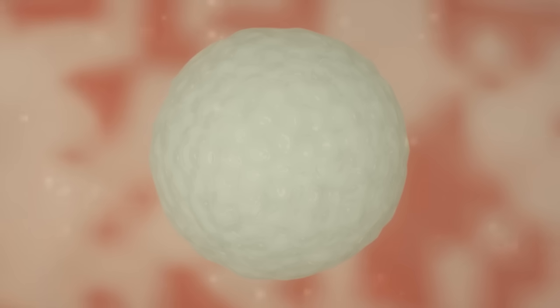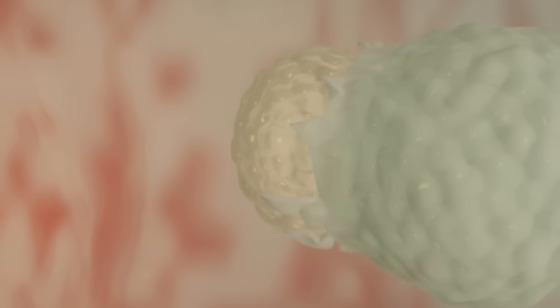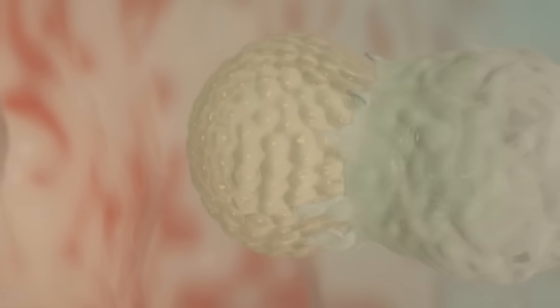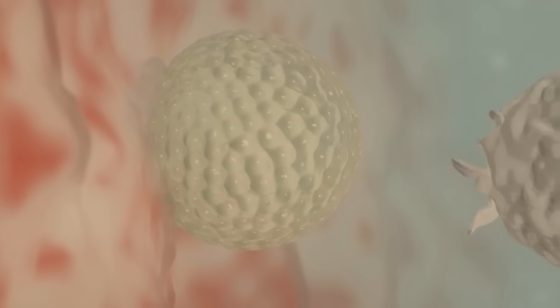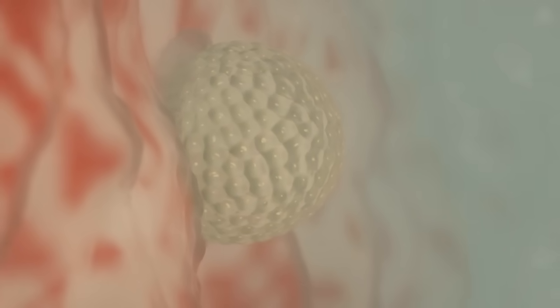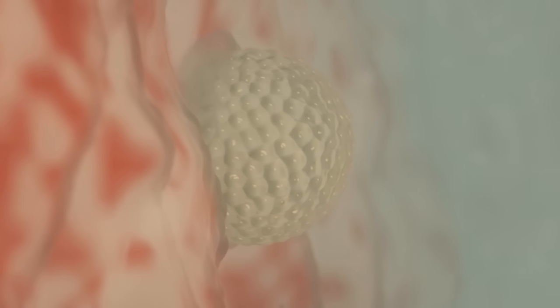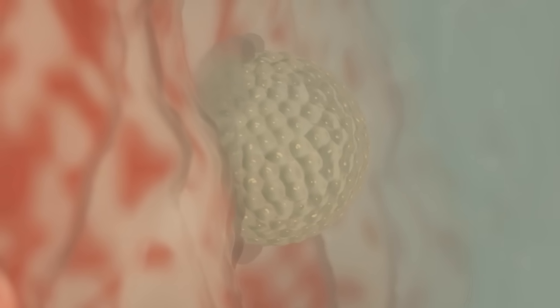The blastocyst floats in the protective and nourishing uterine mucus. For implantation in the uterus, the blastocyst must first hatch from the protective zona pellucida. Then, the blastocyst burrows further and further into the uterine lining, like a parasite.